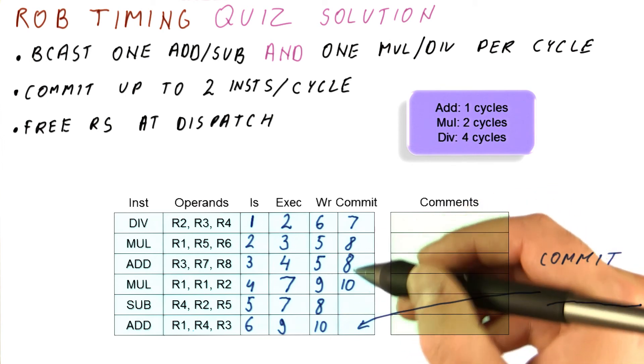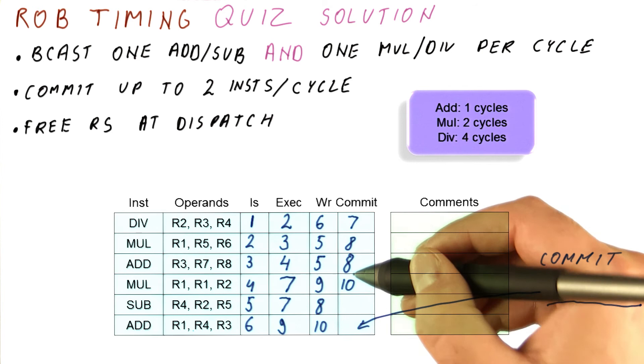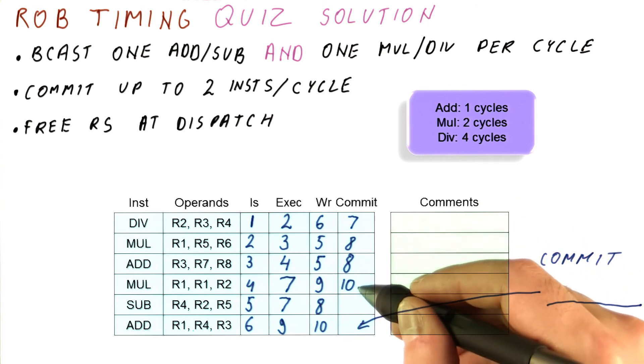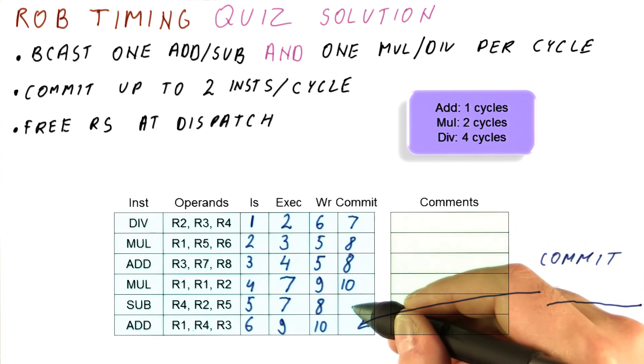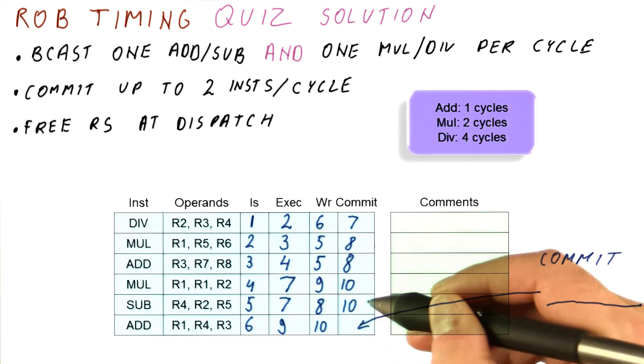Remember that we can commit up to two instructions per cycle. So what's going to happen is in cycle 10, we are going to also try to commit the subtract. We are only committing this multiplication so far. We can commit two instructions. We will try to commit the next instruction. So in cycle 10, we will actually commit this.